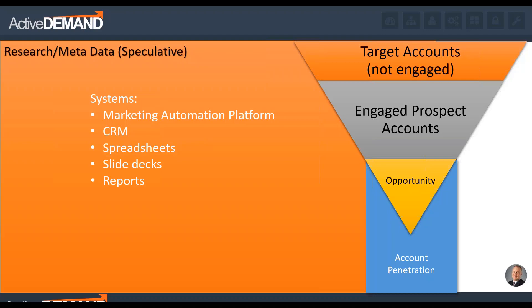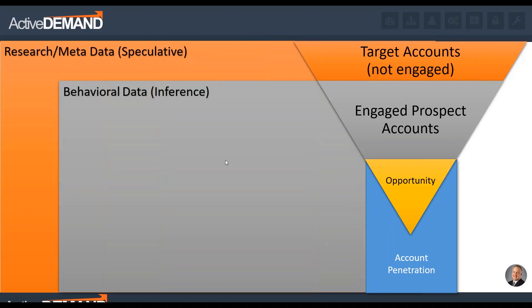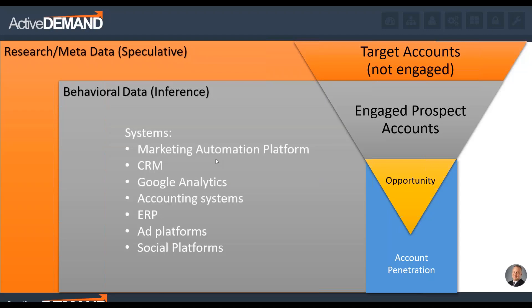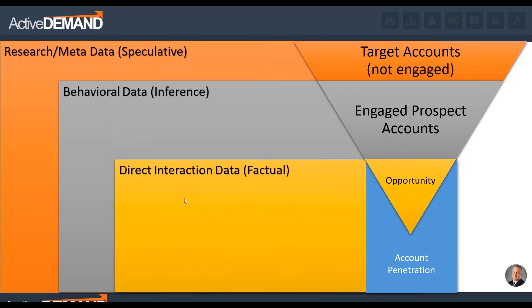As we start doing marketing activities, our prospects are going to engage with us. ActiveDemand is fantastic for collecting all of this behavioral data. This behavioral data is what we use for inference — the prospect does this, we can infer they're interested in that. We can watch what they're doing on the website, see which emails they click, which pages they visit. This data clearly lives in ActiveDemand but is also exposed in dashboards.